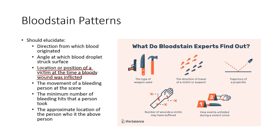The direction that the blood drips from a wound will tell you what the direction of gravity was, and that'll tell you how that body part was being held at the time they were injured. You can also determine the minimum number of bleeding hits that a person took. You may have a lot of blunt impact trauma as well as bleeding trauma, and you should be able to differentiate the two, along with the approximate location of the person.